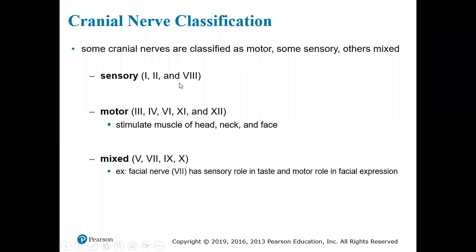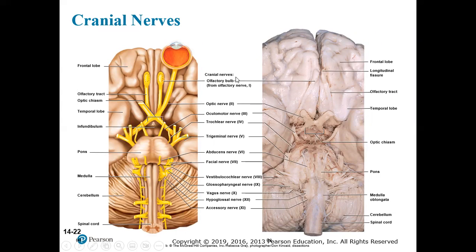We have three sensory cranial nerves: one, two, and eight. We have five motor cranial nerves: three, four, six, eleven, and twelve. Our mixed cranial nerves are five, seven, nine, and ten. Cranial nerve one is the olfactory nerve. Cranial nerve two is optic. Cranial nerve three is oculomotor. Cranial nerve four is trochlear. Cranial nerve five, the largest, is the trigeminal nerve. Cranial nerve six is the abducens nerve. Cranial nerve seven is the facial nerve. Cranial nerve eight is the vestibulocochlear nerve. Cranial nerve nine is glossopharyngeal. Cranial nerve ten is vagus. Cranial nerve eleven is the accessory nerve, and cranial nerve twelve is hypoglossal.